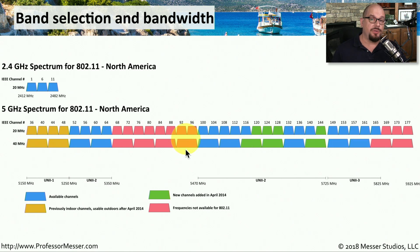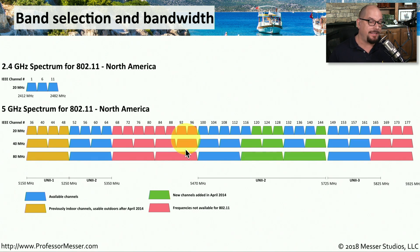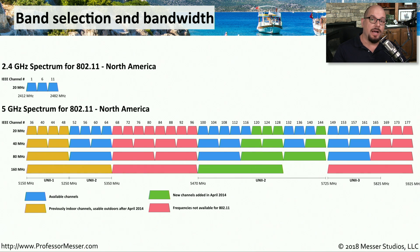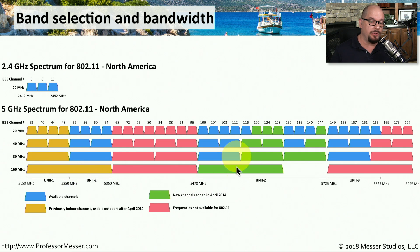If you're using 802.11ac, then you'd be using 80 megahertz ranges. You can see there are six of those ranges available. And if you're using the optional 160 megahertz range with 802.11ac, you have two contiguous ranges that you can use in the 5 gigahertz band.